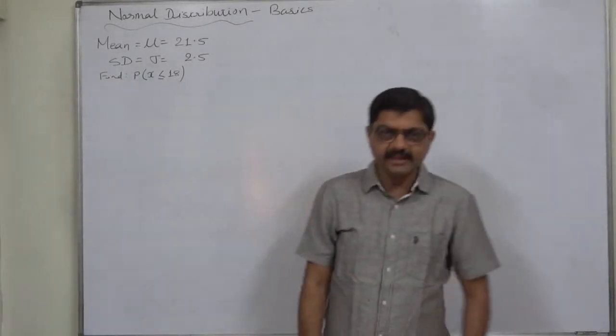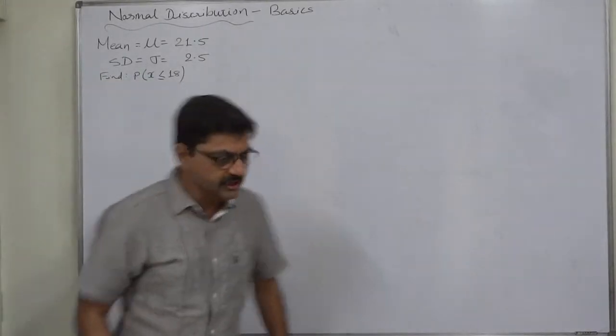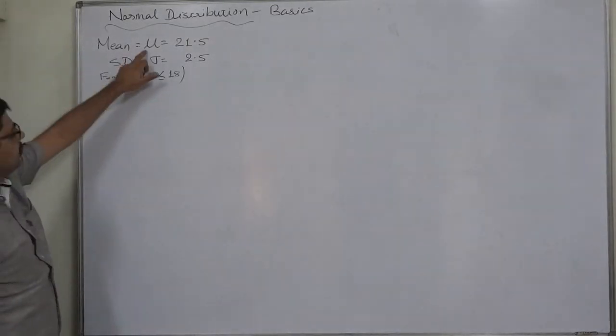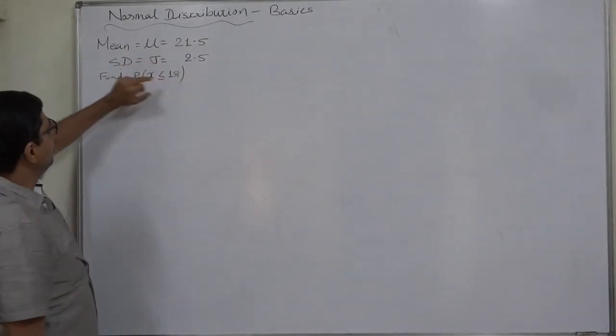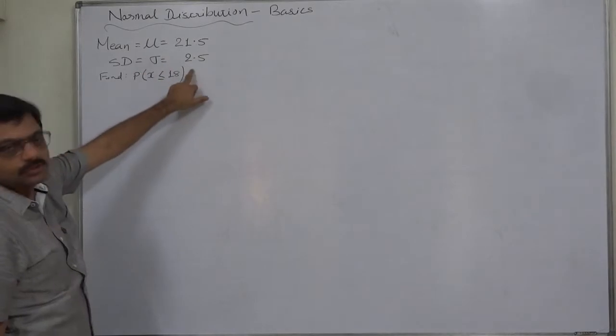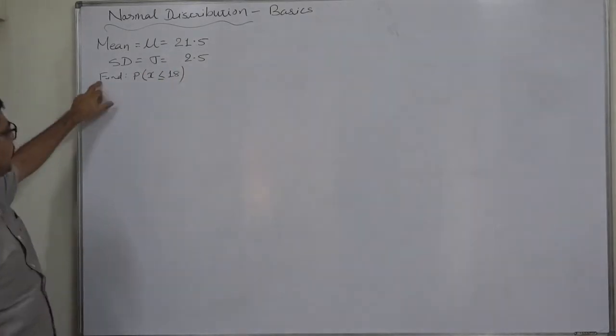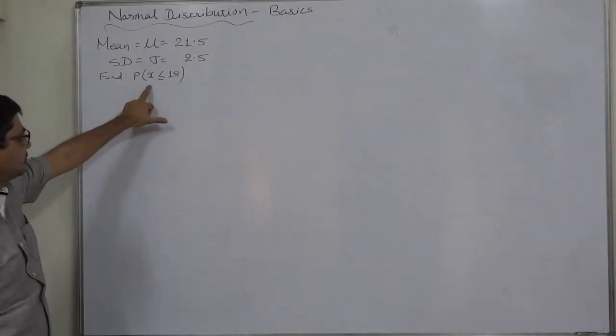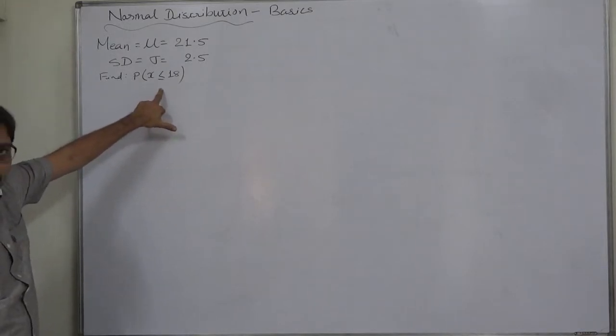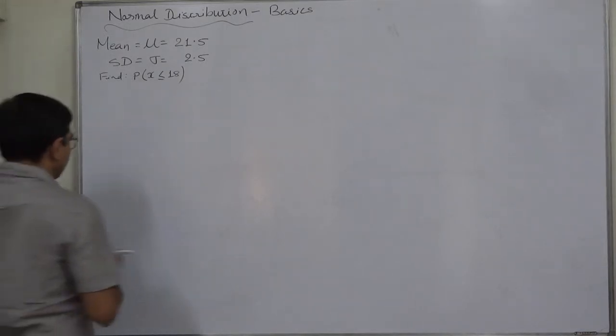Hello and welcome. The next case in basics of normal distribution is with us. Mean or mu is 21.5, standard deviation or small sigma is 2.5, and find the probability that x is less than or equal to 18, or x takes value 18 or less.